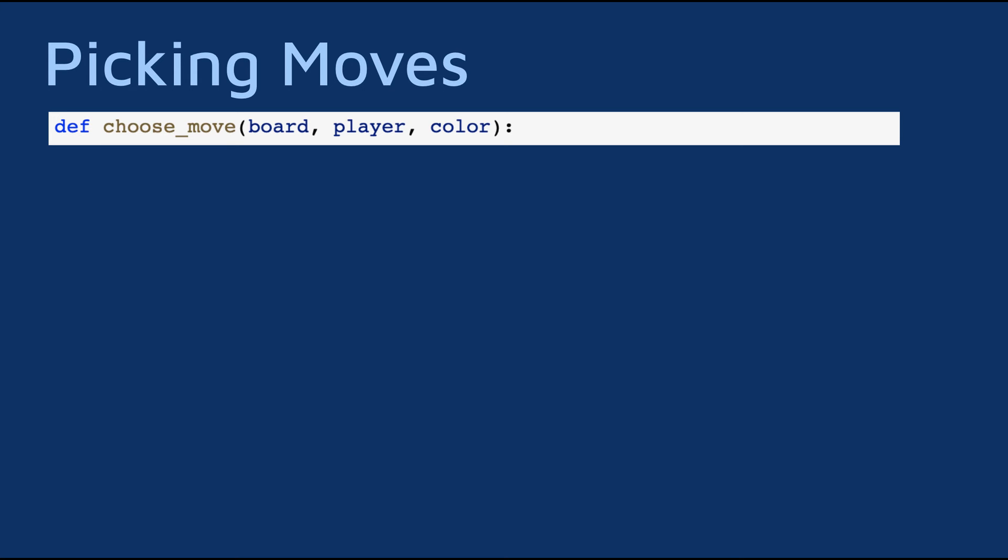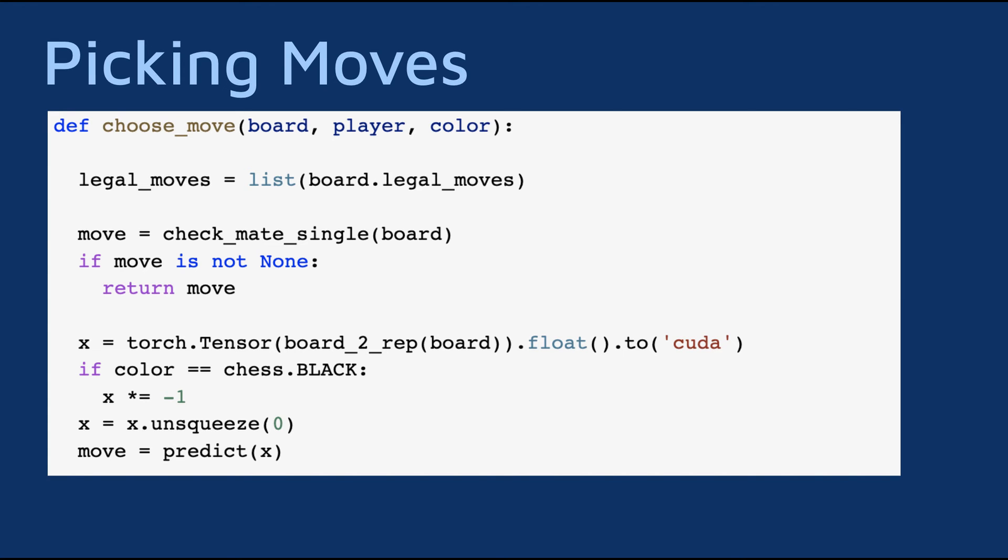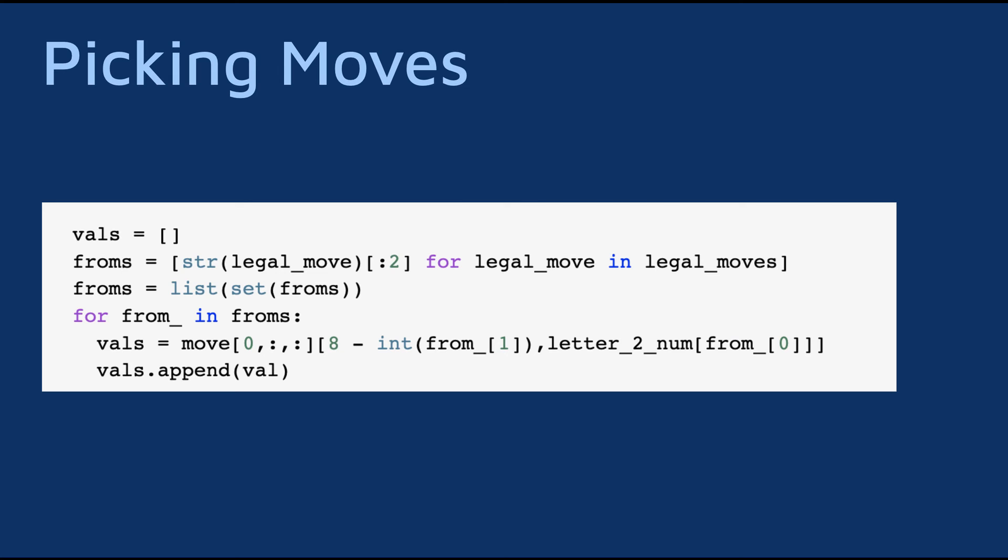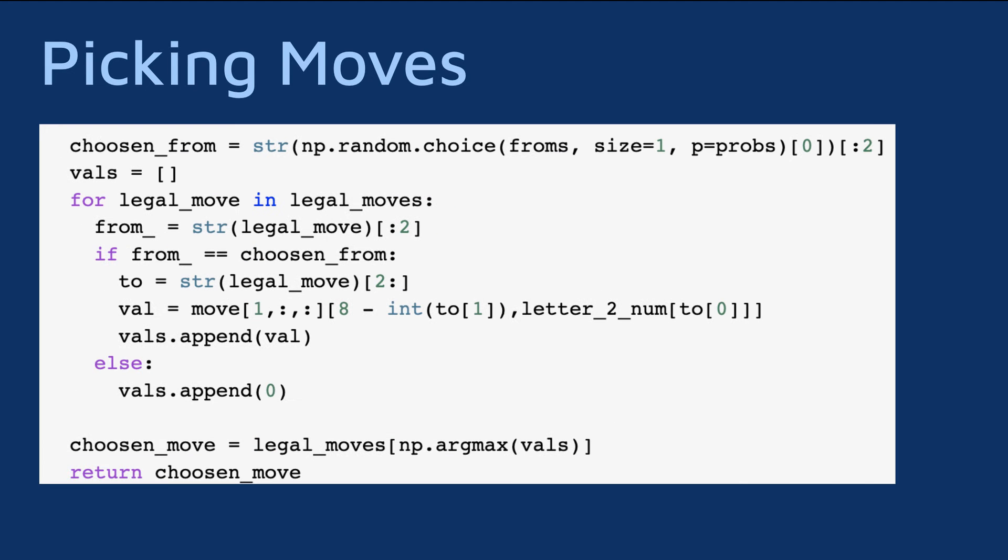Now we can look at the overall move selection process. First, we get the list of legal moves, then we check for single move mate options, afterwards we convert the board into matrix representation and make a prediction, then for each unique legal starting position we take the value the network assigned to it and make a move from that position. These values are converted into a probability distribution and sampled from. The next part, where to move the piece we chose, is carried out by taking the maximum probability legal move from the second feature map.